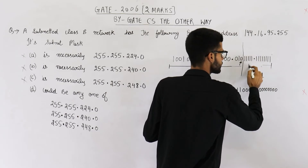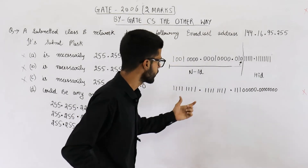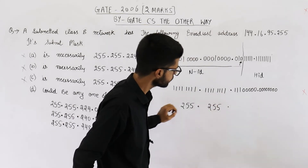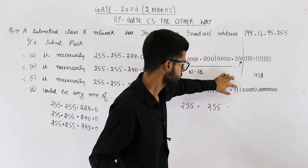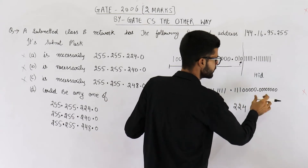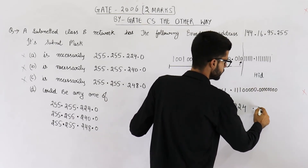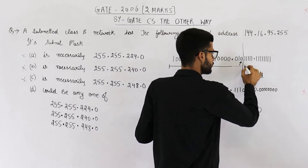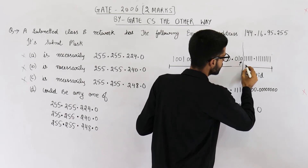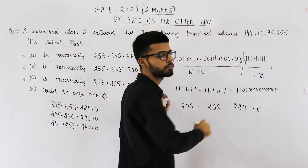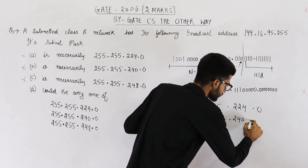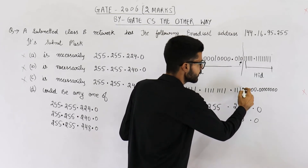The host ID can start from different positions. Let us see what the possible answers are. For one case: 255.255 — 128 plus 64 is 192, plus 32 is 224 — so 255.255.224.0. If instead the host ID starts one bit further in, we borrow one more bit, giving 255.255.240.0.